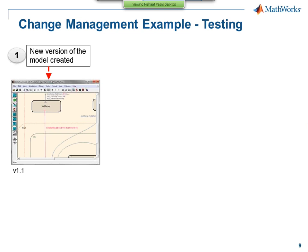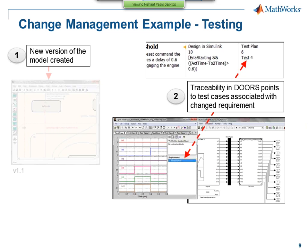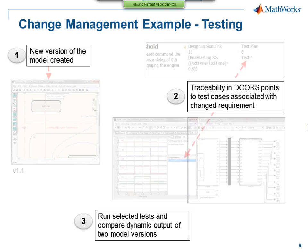My next step would be to create a new version of the model — version 1.1 — incorporating the customer's change. With the traceability view, you can also associate requirements with test plans, then trace which particular test case is affected by a requirement change. Instead of rerunning the entire battery of tests, you can be very specific about which tests need to be revisited.